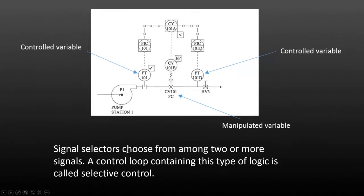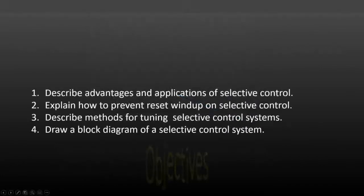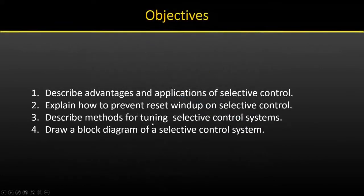Signal selectors choose from among two or more signals. A control loop containing this type of logic is called selective control. Our objectives today are going to be describing the advantages and applications of selective control, which we've almost covered already.